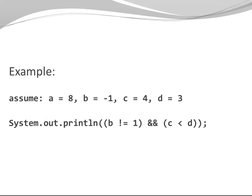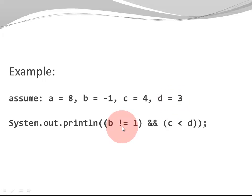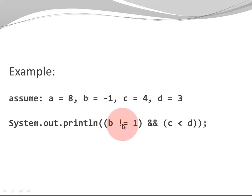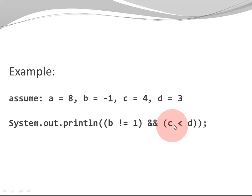Let's look at an example. Assume four integers: A = 8, B = -1, C = 4, D = 3. We're evaluating: B != 1 AND C < D. Starting with B != 1: B is -1, and -1 is not equal to 1, so that is TRUE. Since we have an AND operator, we still need to evaluate the right-hand side. C and D are 4 and 3; 4 < 3 is FALSE. TRUE AND FALSE is FALSE.